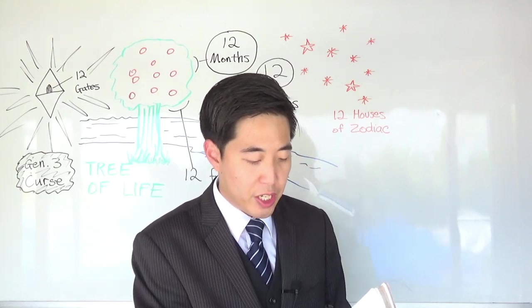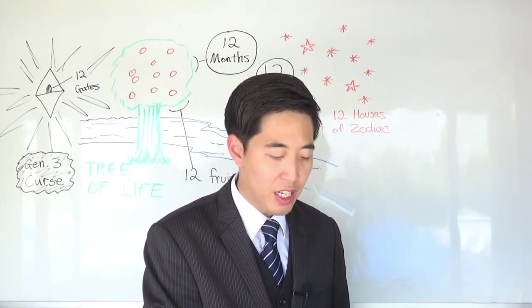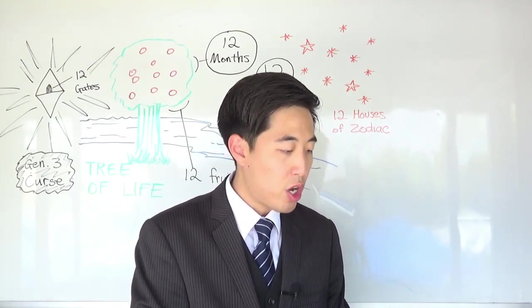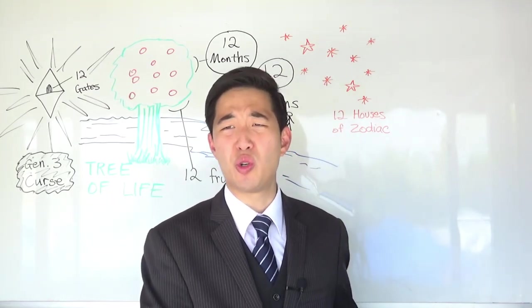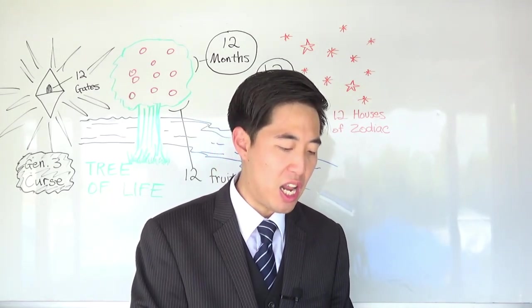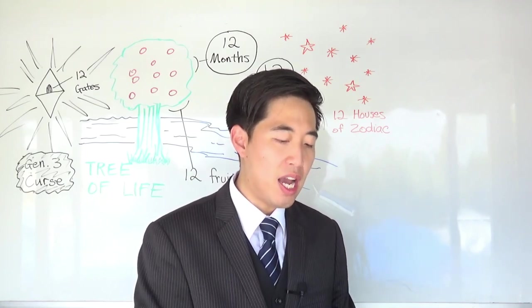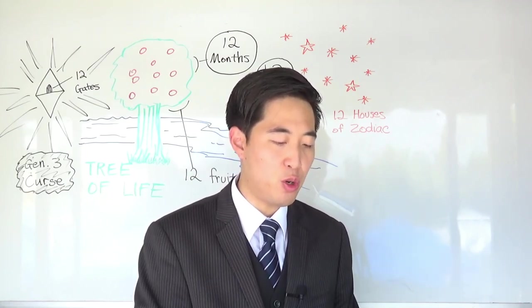The next part of verse 3 says, But the throne of God and of the Lamb shall be in it. So, remember, God's throne is in New Jerusalem. Now it says God and the Lamb. So why is it a single throne but with two different people?